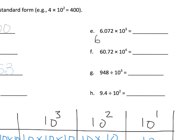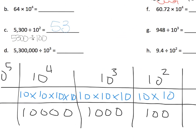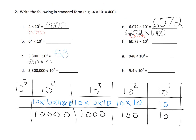We're going to do 6.072 times 1,000. We know from our previous videos that means the decimal is going to move three places to the right — or each of the digits is going to move three places to the left because we're getting bigger. We're multiplying by 1,000, so the answer is going to get bigger, and that becomes 6,072. Parents and teachers, the purpose of these problems is to give students plenty of opportunity to practice moving from exponential notation to standard form.